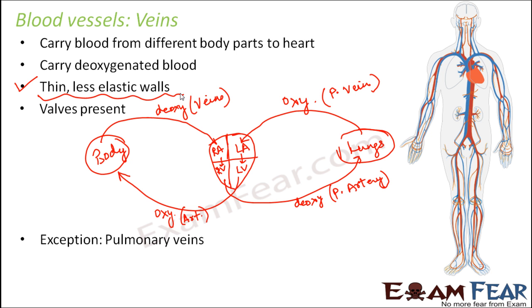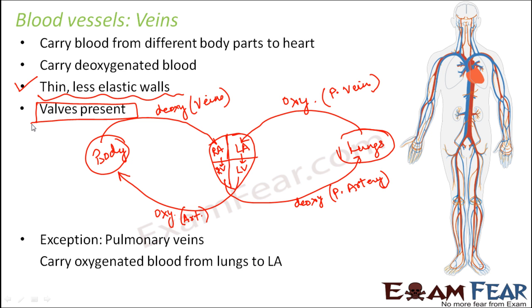The exception to veins is pulmonary veins, which carry oxygenated blood from the lungs to the left auricle of the heart. In case of veins, another important point is that valves are present. Valves are like doors which regulate or control the flow of a fluid. These valves prevent the backflow of deoxygenated blood — we do not want deoxygenated blood flowing back to different parts of the body. So valves ensure that deoxygenated blood flows only in one direction, toward the heart.